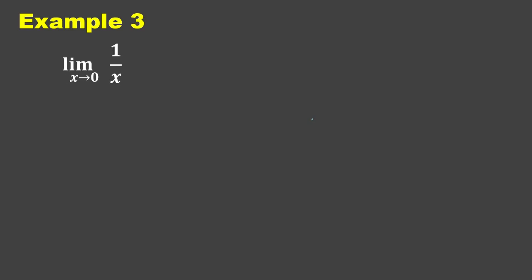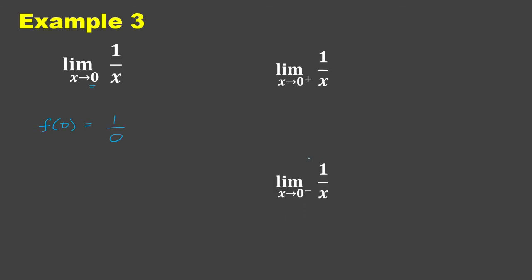For Example 3, let us try to get the limit of 1 over x as x approaches 0. Doing f of 0, we have 1 over 0. So let us get the limit from the right of 0 and from the left of 0. On the number line, this is 0, negative 1, and 1. From the right of 0, let's try 0.001; and from the left, let's try negative 0.001.